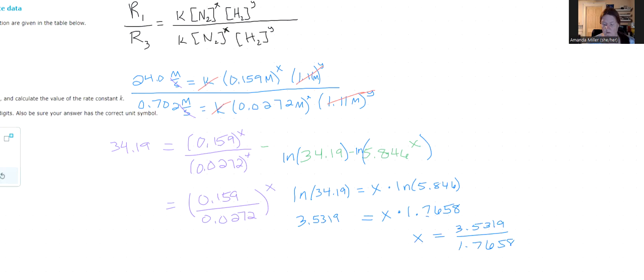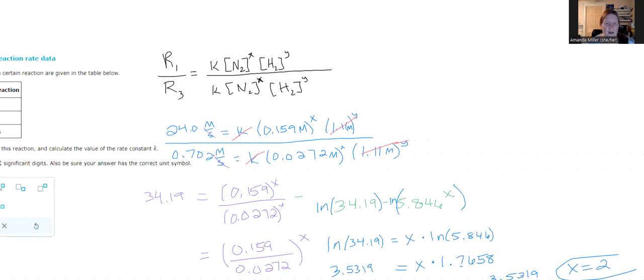Hopefully it is 0, 1, 2, or 3 because those are the options. And what I get from this, when I type that in my calculator, I get 2.00016. So obviously, X is second order. So what we would say is this reaction is second order with respect to nitrogen. That's what we were solving for with X.